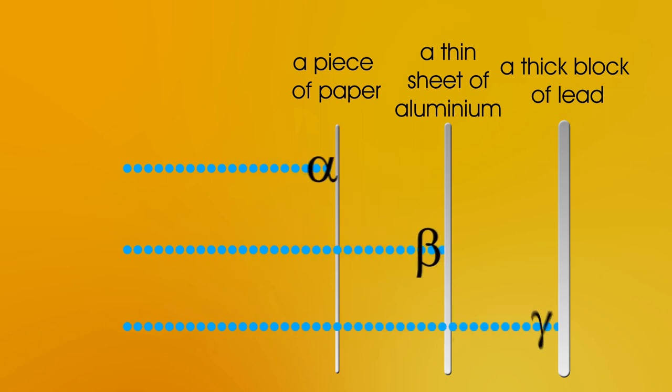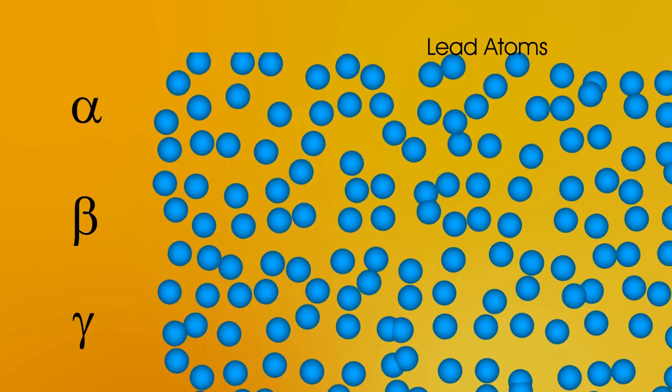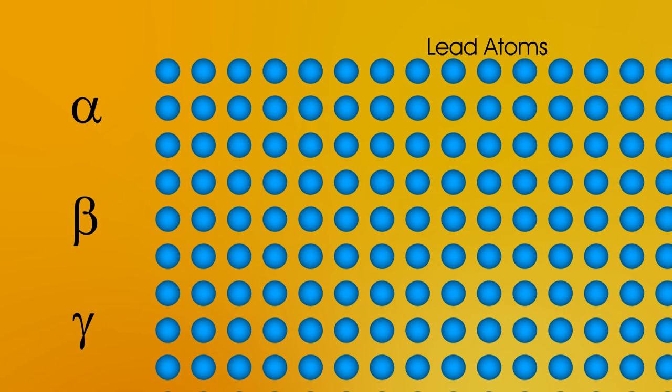So why is it that alpha is stopped so easily and gamma is so difficult to stop? Well, it's all about ionisation again. Let's get rid of the paper and aluminium and zoom in on the lead.